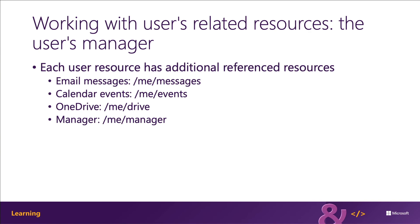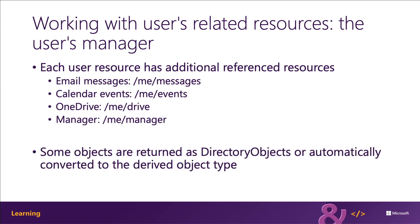Each user resource has additional referenced resources such as their email messages, calendar items, and files in OneDrive consumer or OneDrive for Business. One of the resources linked off the user resource is the user's manager. The manager property on a user resource is returned as a directory object type. If you're using one of the native Microsoft Graph SDKs, it should automatically convert the type to a user object, but if not, you can always cast it as a user.